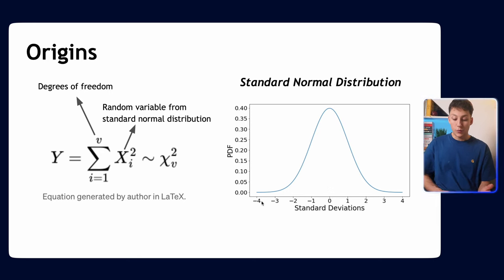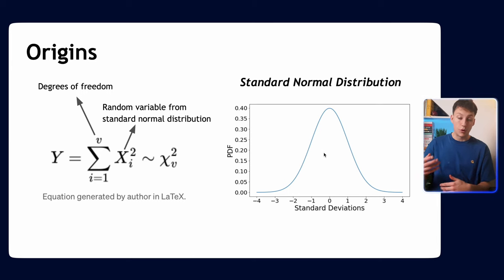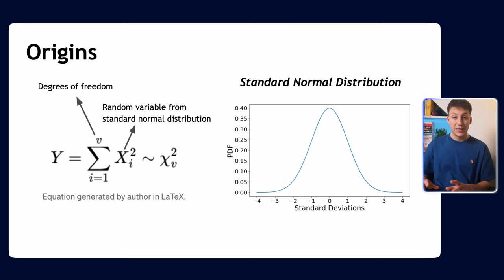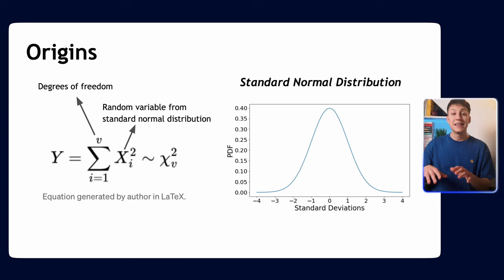The chi-squared simply samples a value from the standard normal distribution, squares it — and that is it. Or, depending on the number of degrees of freedom, it may sample several of those values, square them, and sum them up. That really is all there is to it, and that's where the 'square' comes in — it's all about squaring these standard normal distribution values.